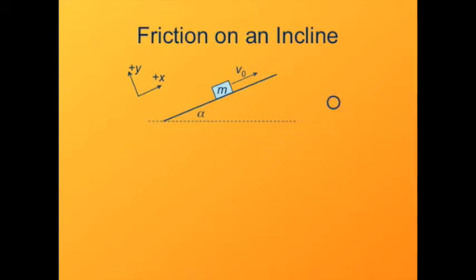Here we'll make a free-body diagram for the forces acting on the block. The obvious force is the force of gravity — its weight, mg. There's a normal force acting in the plus y direction. And the force of friction: since the object is sliding up the ramp, the force of friction is going to be down the ramp.